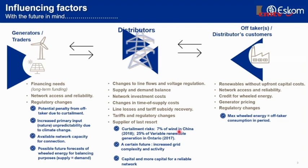For distributors, there will be a lot more complexity to deal with — including curtailment management — which means more cost. They will need much more capital to be able to manage and supply reliably by maintaining and expanding their networks.